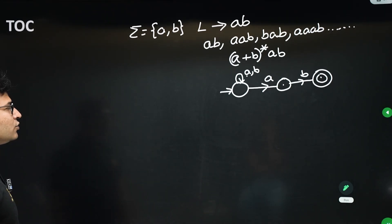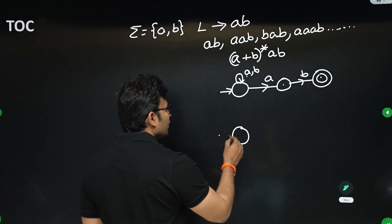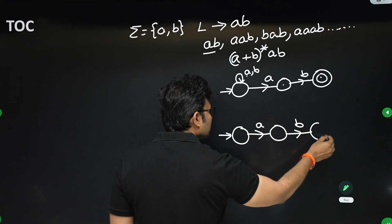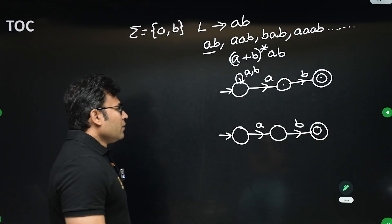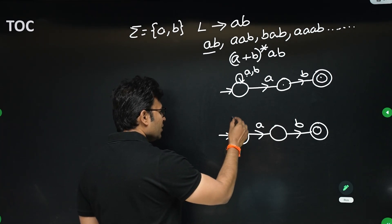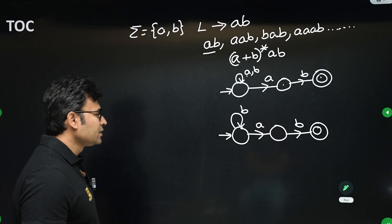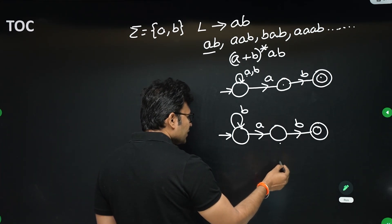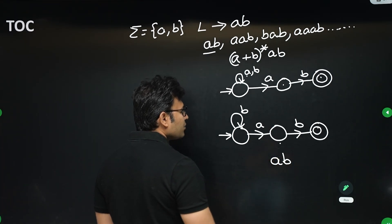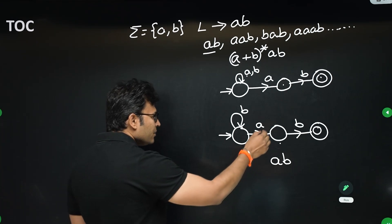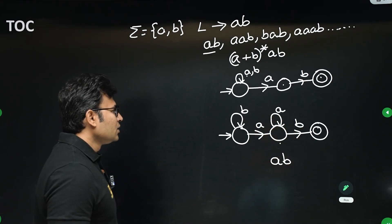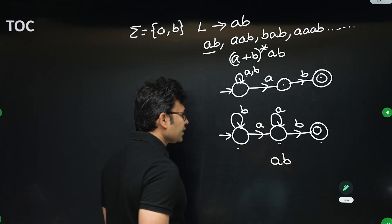Now let's do the DFA design. It has to end with 'ab', so the minimum string is 'ab' — accept it. Initially any number of b's can come — don't kill it, there is hope we can still get 'ab'. We reach the next state by seeing 'a'. From that state, if we get 'b' we are done — it ends with 'ab' and we move to the accept state. From the 'a'-seen state, any number of additional a's still keep us waiting for 'b'.